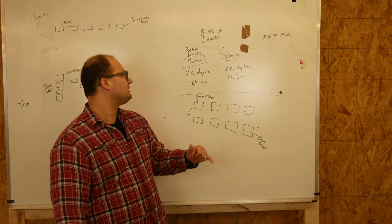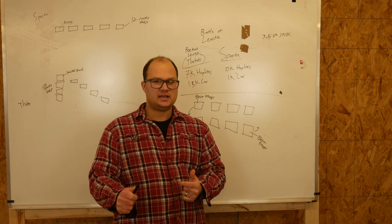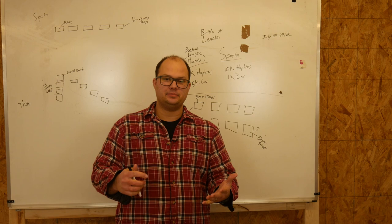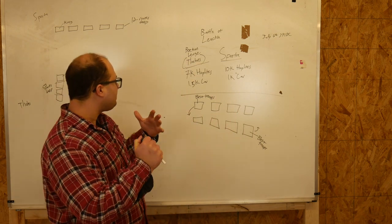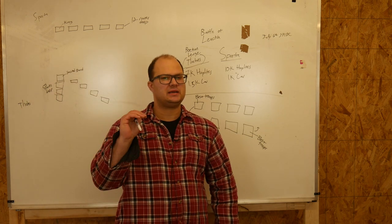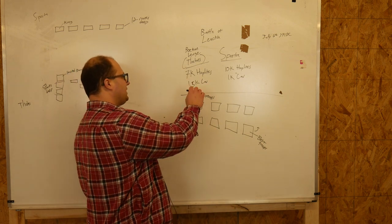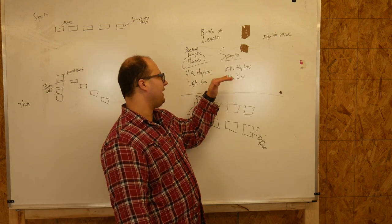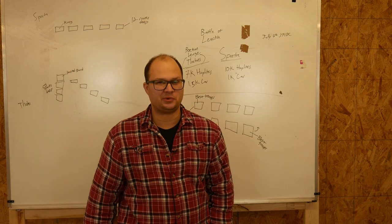So this battle took place on the 6th of July, 371 B.C., and this was a battle between Sparta, I'm sure you've heard of them, and Thebes, which was a city in the Grecian area. So basically what we have here is on one side we have the Boeotian League, led by the city of Thebes, and they're coming in with about 7,000 hoplites and about 1,500 cavalry. And on the other side you have Sparta with 10,000 hoplites and 1,000 cavalry. I know who you think wins, but you're wrong.